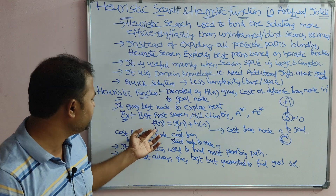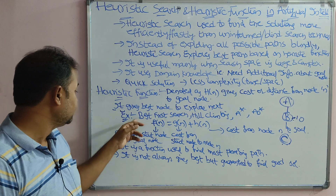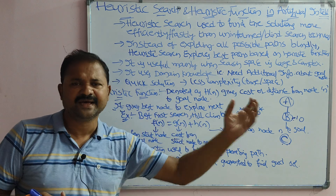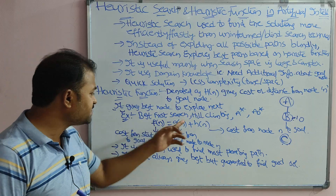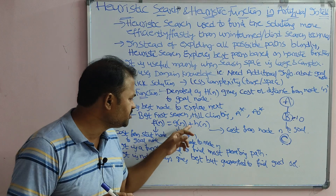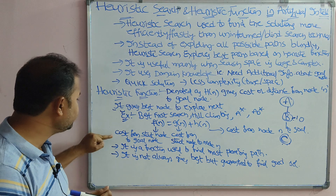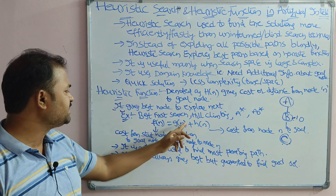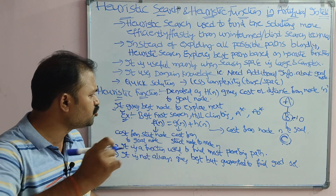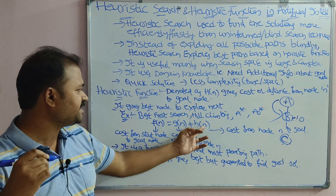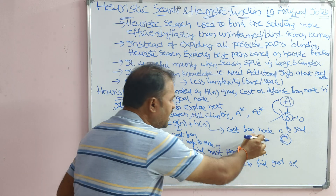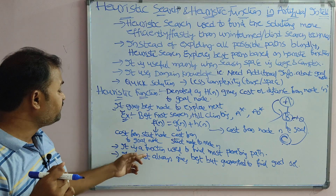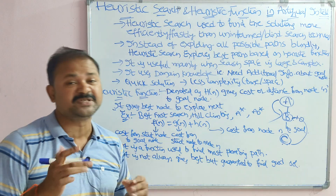In the A* algorithm, the heuristic function is: f(n) = g(n) + h(n). f(n) gives the total cost from the start node to the goal node. g(n) gives the cost from the start node to node n. h(n) is the heuristic function giving the cost from node n to the goal node. This function is used to find the most promising path.